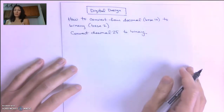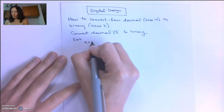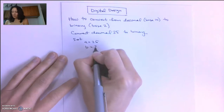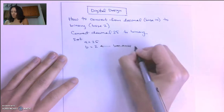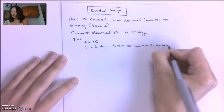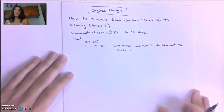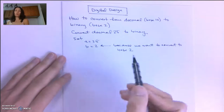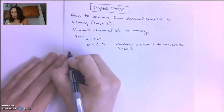So using the iterative division algorithm, the first thing we're going to do is set A equal to 25, and we're going to set B equal to 2. We set B equal to 2 because we want to convert to base 2. Like we mentioned before for octal and hex, we set B equal to the base we want to convert to. So now we're ready to do the division algorithm.